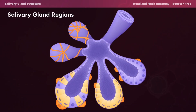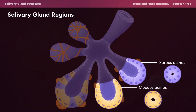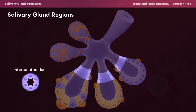Now let's look at the five main regions of the salivary glands. The serous acinus is a sac-shaped cavity comprised of serous cells that produces and secretes saliva. The mucous acinus is a sac-shaped cavity comprised of mucus cells that produces and secretes mucus. The mixed acinus contains a mix of both serous and mucus cells.